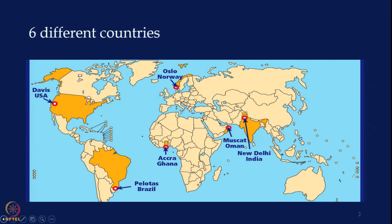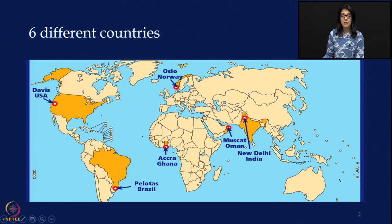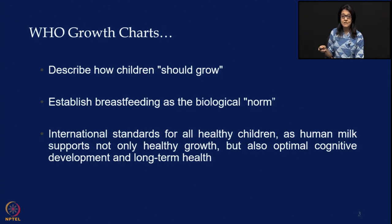Let us start with the WHO Multicenter Growth Reference. This was a study done between 1997 and 2003. They took data from children in six different countries: USA, Norway, Ghana, Brazil, Oman, and India. India was part of this multi-center study, which is important — six different countries were involved including the US and India.